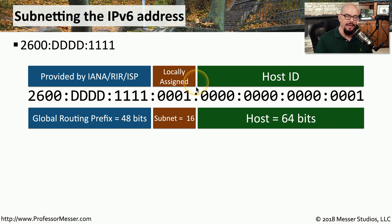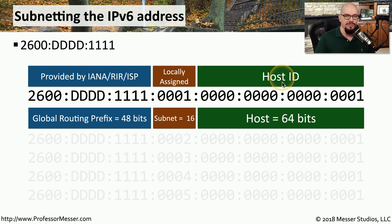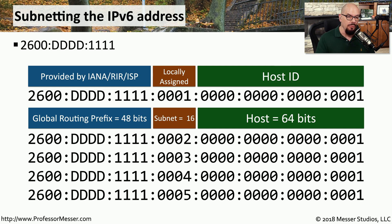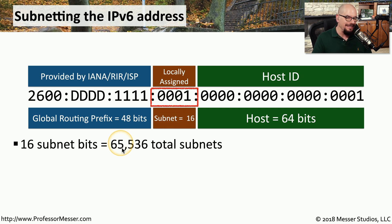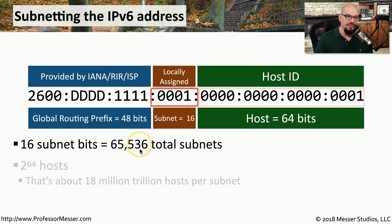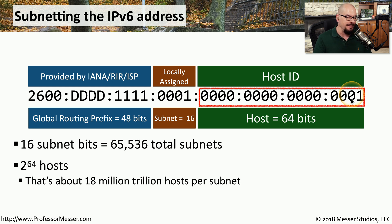So we have an even grouping in this IPv6 address, where the first half of the address is the network and the second half is the hosts. This means that if we wanted to create additional networks, we could simply change the subnet address in the middle — so we would have a 0002 network, a 0003 network, a 4 network, a 5 network, and so on. With these 16 subnet bits, we could create 65,536 total subnets, and for most organizations that is more than enough. This also means that we have 64 bits set aside as a host ID, so each individual subnet could have 18 million trillion hosts. Obviously, you would not put that large number of hosts on a single subnet.